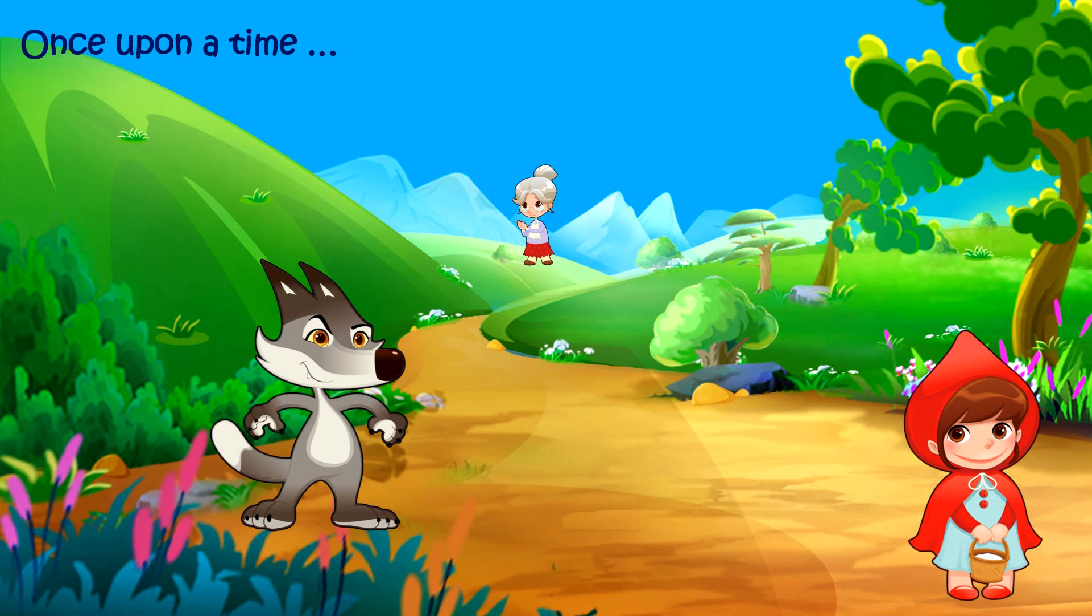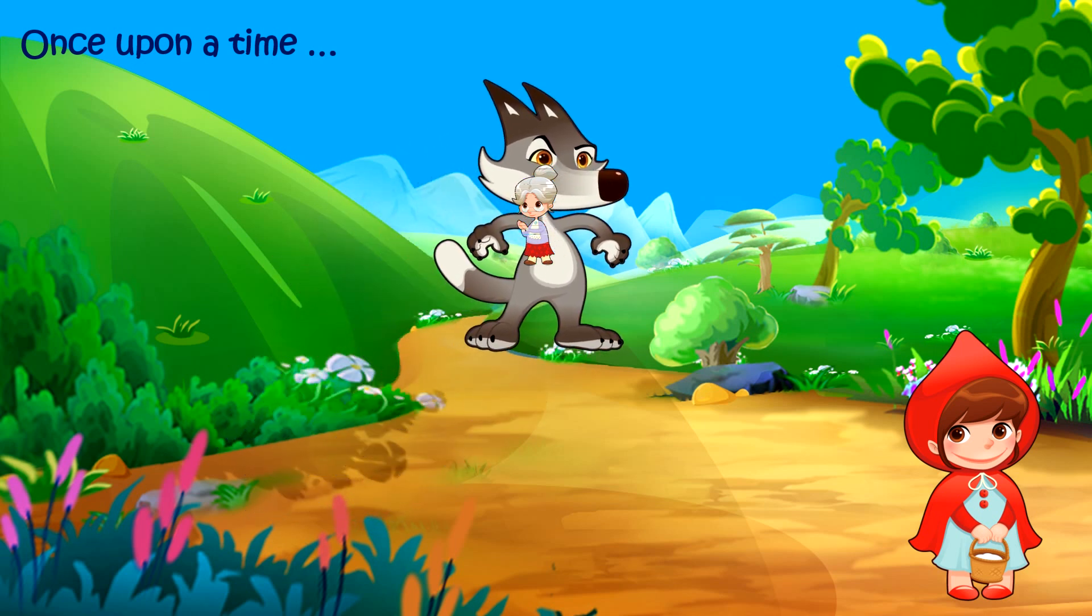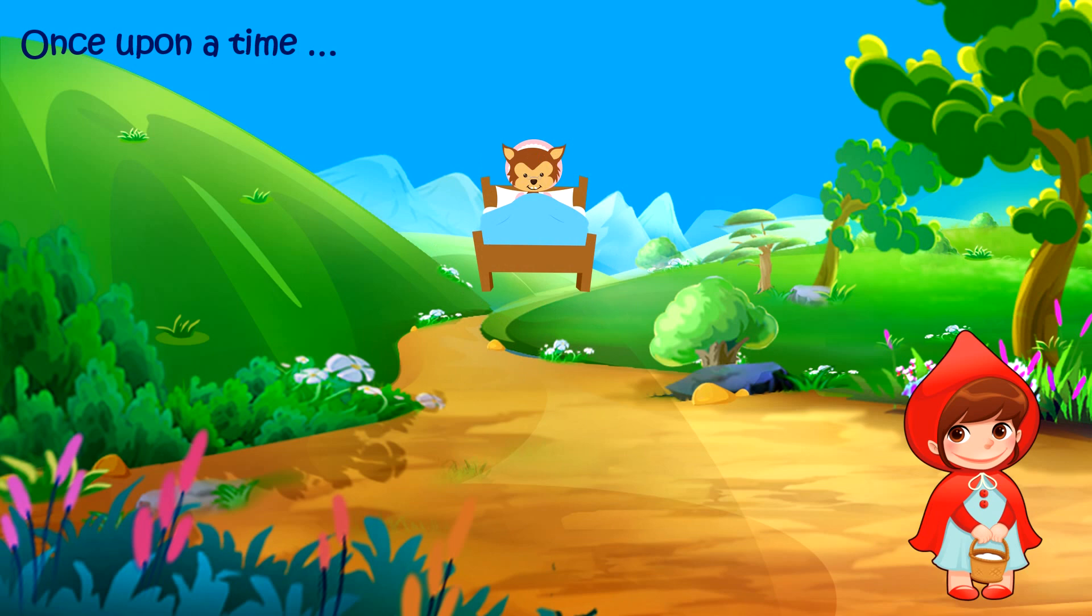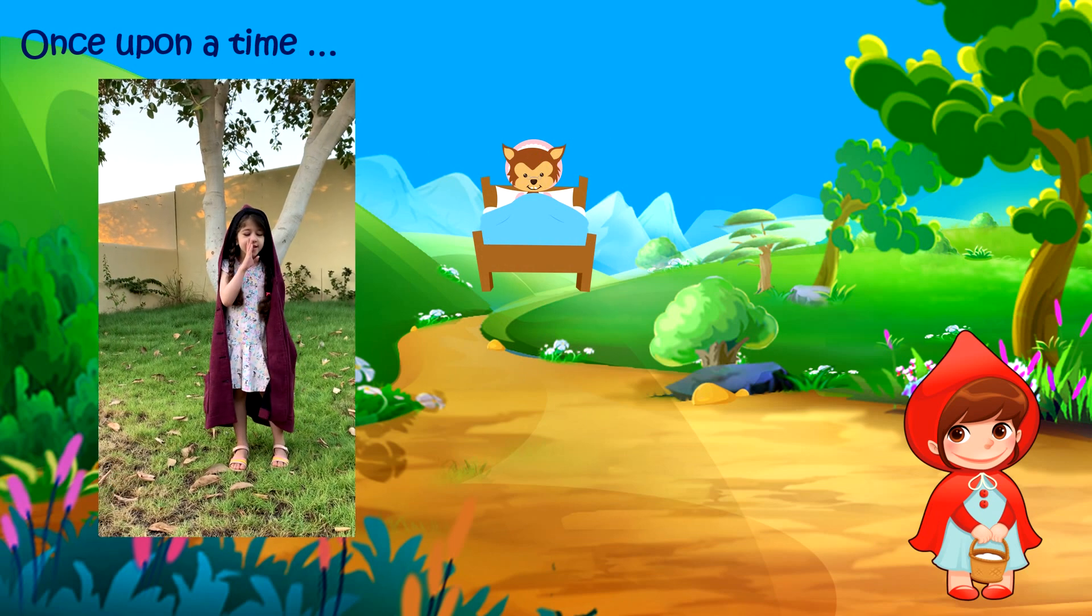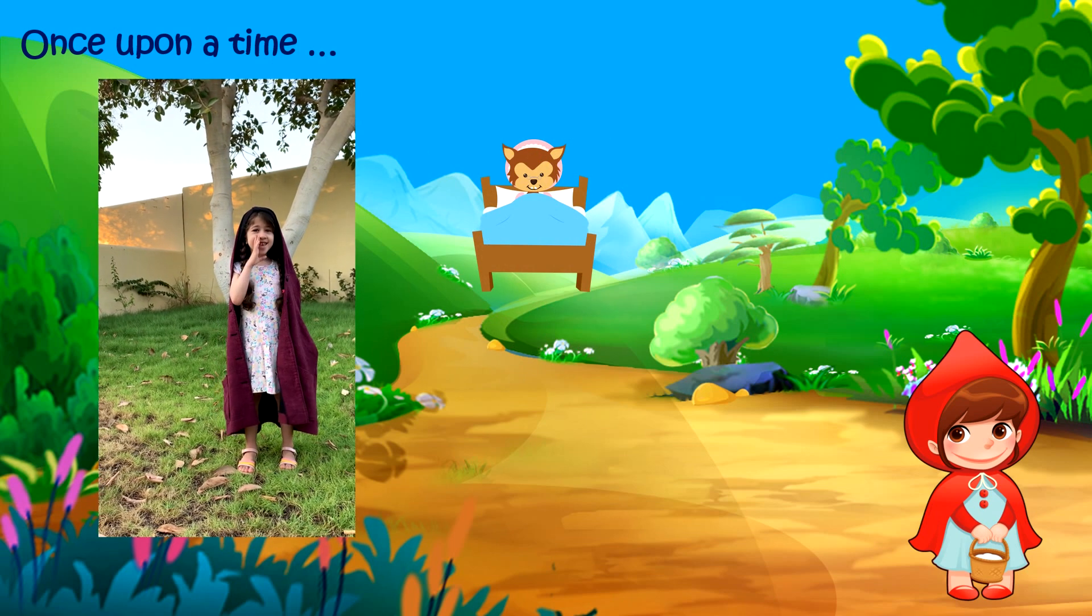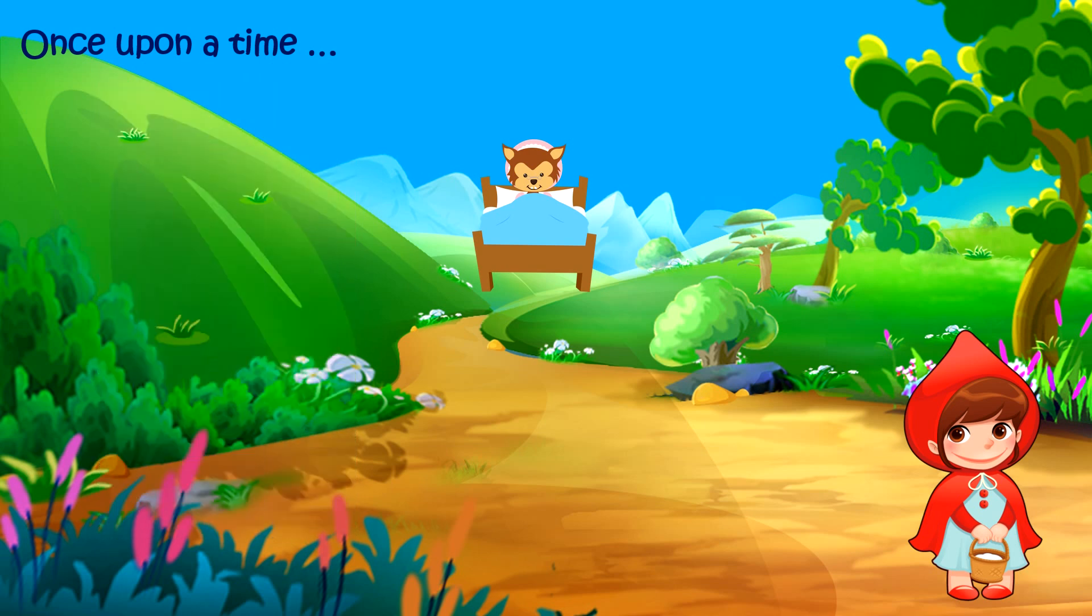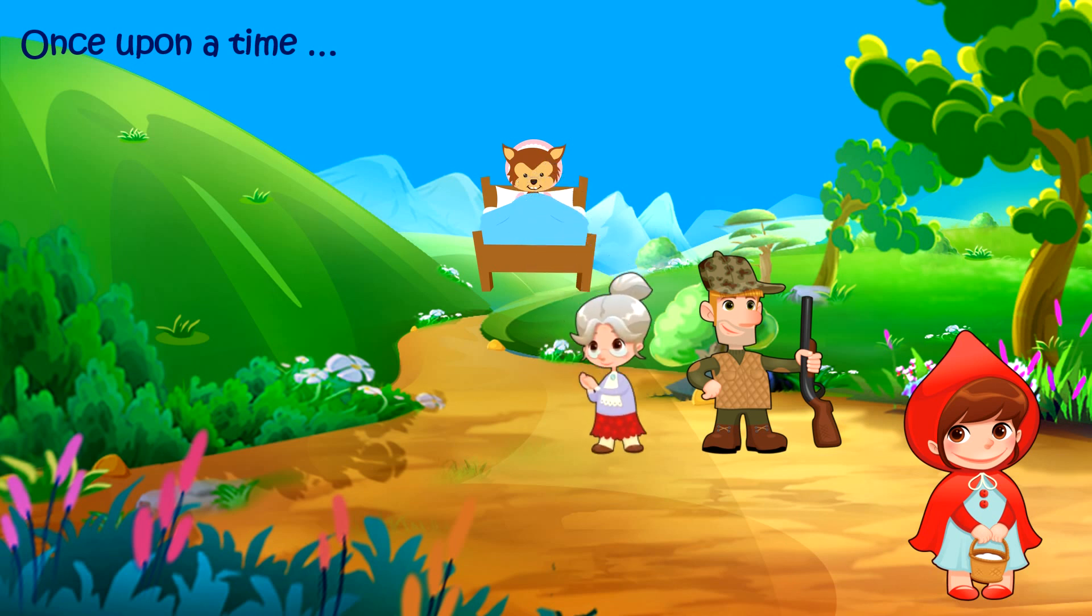The wolf came there first and he tricked Little Red Riding Hood's grandmother and ate her. When Little Red Riding Hood arrived, the wolf was about to eat her as well, but the hunter came and rescued Little Red Riding Hood with her grandma.